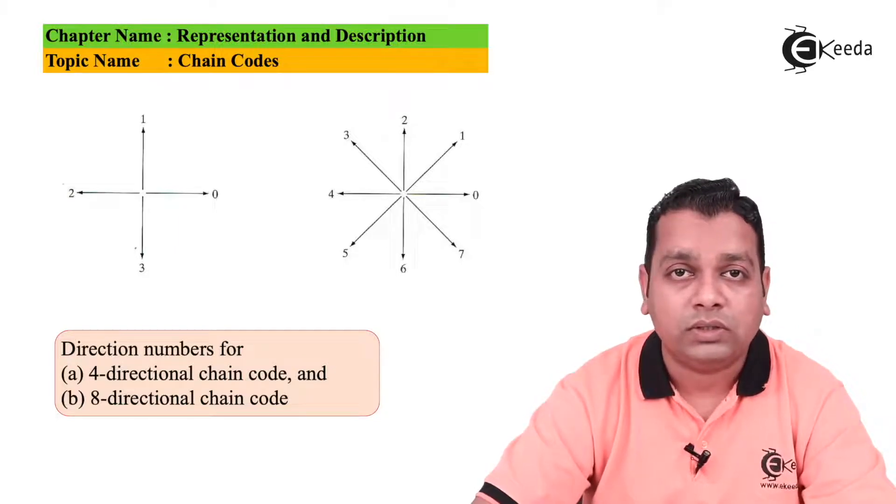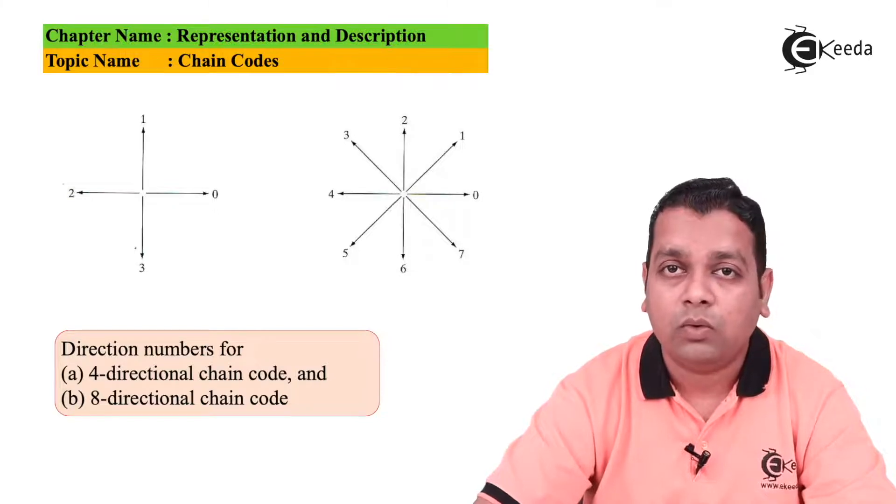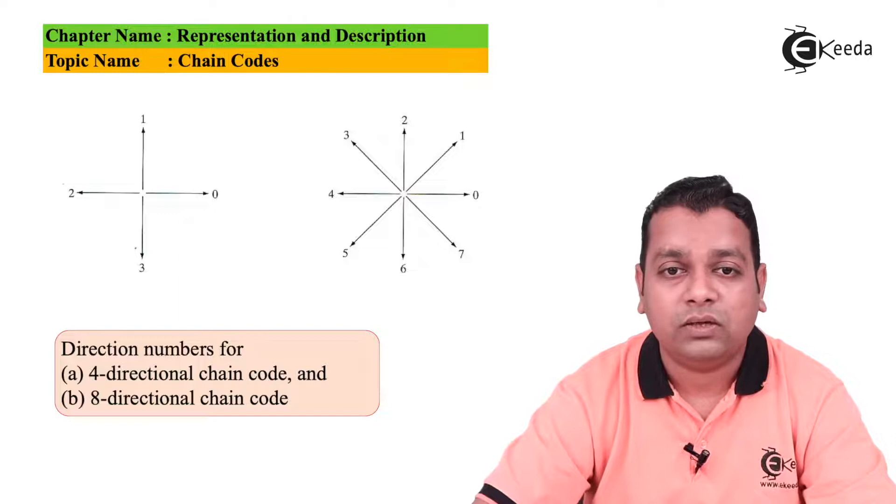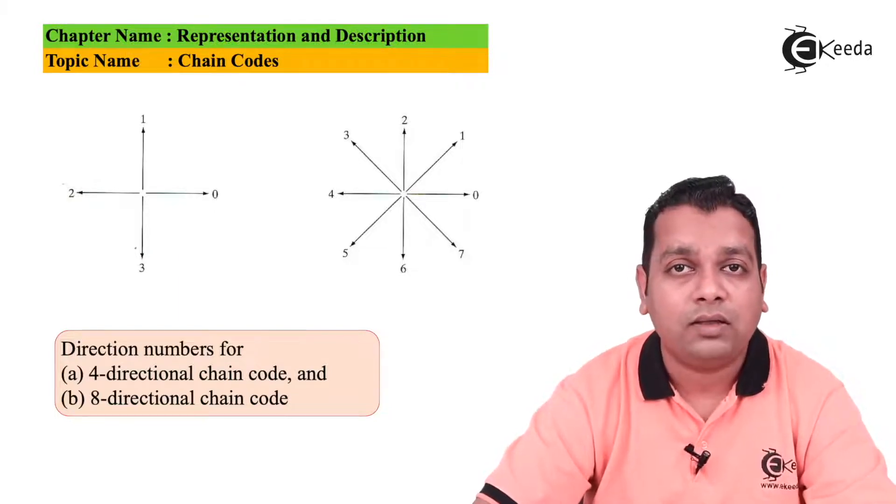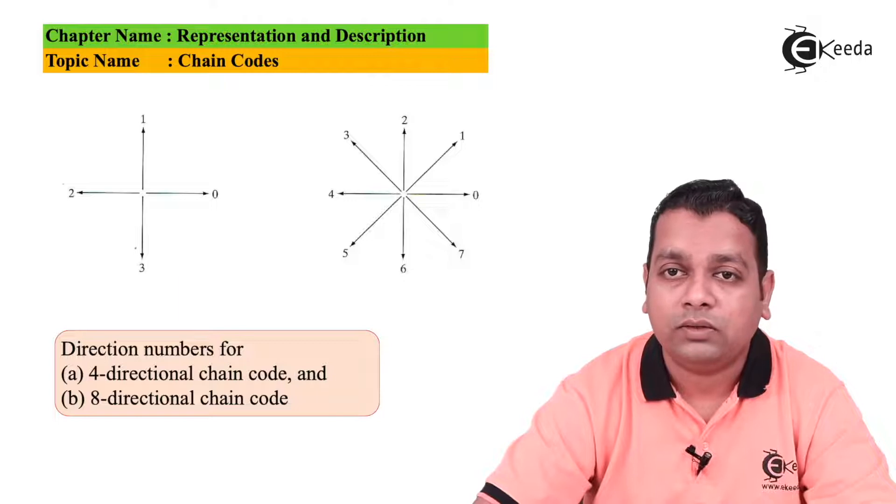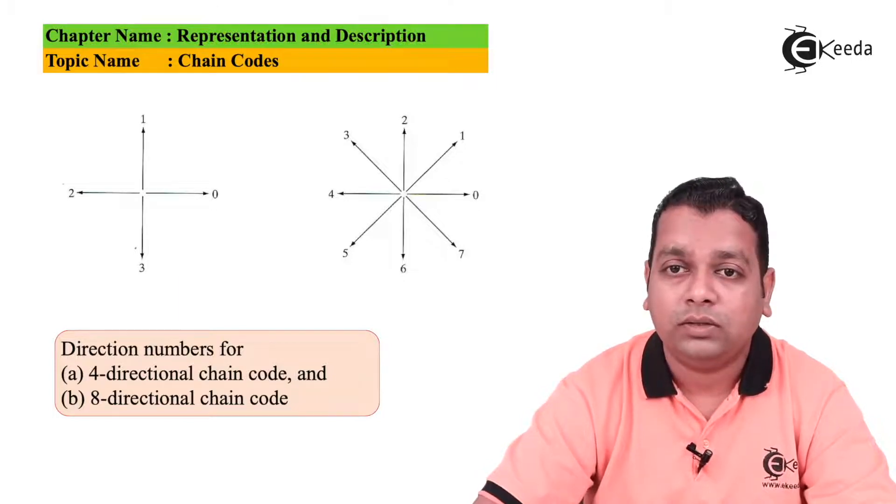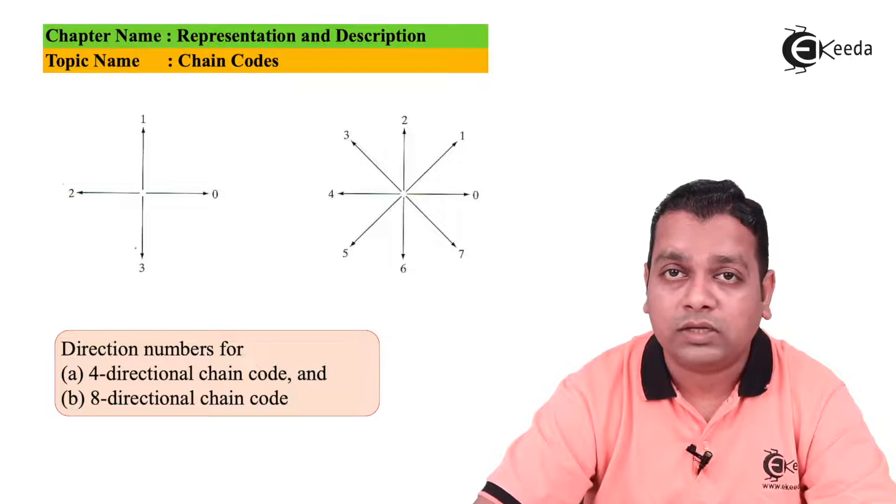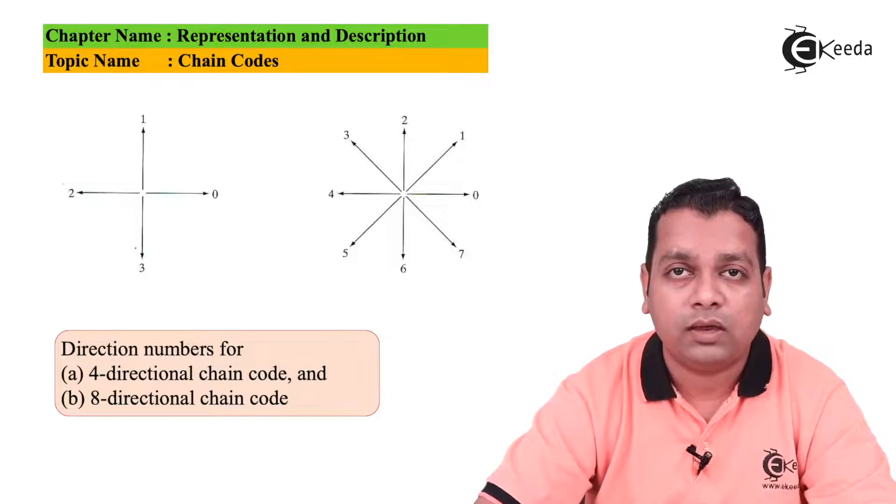Now with respect to the four directional case, here we have more directions available with the eight directional chain code. Again, we start at the right hand side horizontally at zero. Then between zero and one, we have the first direction. If you take the top direction to be the north, downwards to be the south, the rightmost direction to be the east and leftmost to be the west, this is the northeast direction, that is one. Then we have second as a direction towards the north.